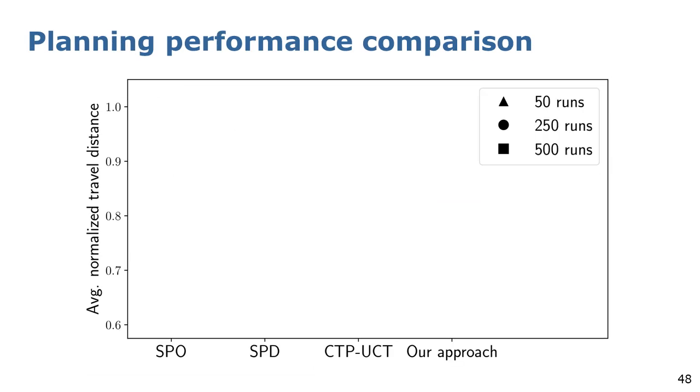Finally, we compare our approach with other planning approaches. One is referred to as Determinized Shortest Path, or SPD. It makes a most likely assumption on the current belief and plans the shortest path in this configuration. The other one is the original CTP-UCT. Both these approaches use our factor graph model for computing predictions. Otherwise, no comparison would be possible.